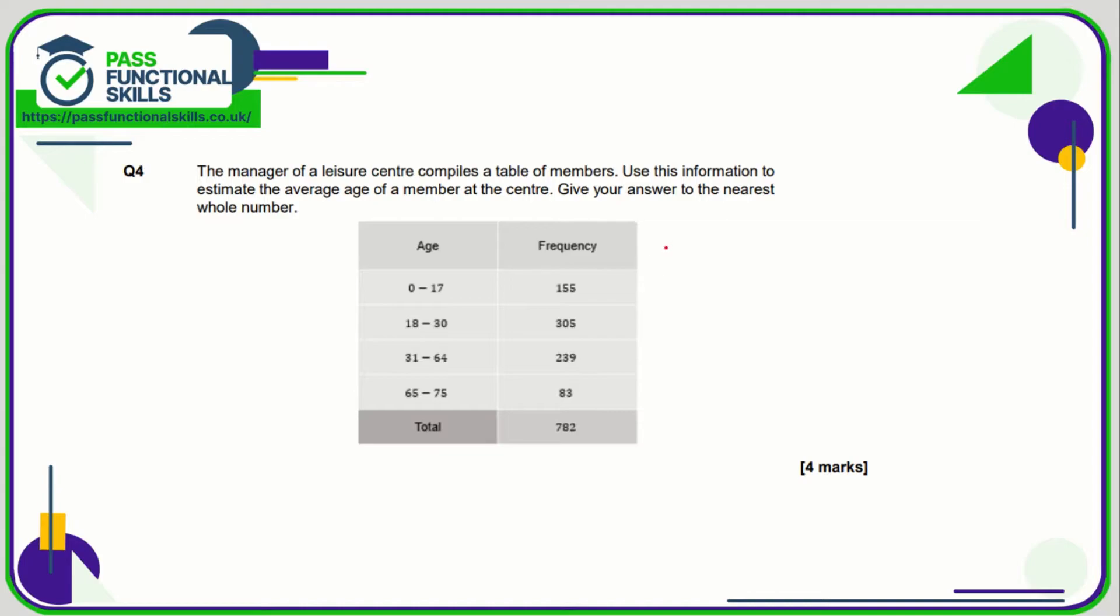Question number four. Here we've not been given the midpoint column, so we need to create a midpoint column and then we also need to create a frequency times midpoint column as well. What's the midpoint between 0 and 17? That is 8.5. Between 18 and 30 is 24, 47.5, and 70.